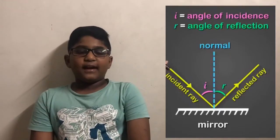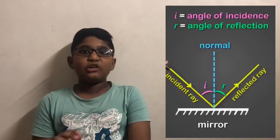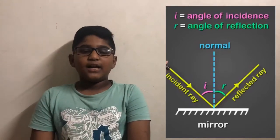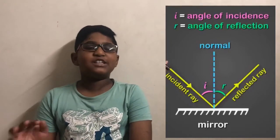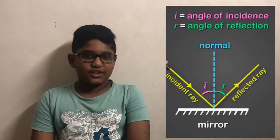The angle between the line of incidence and the normal is the angle of the incident ray. The angle between the normal and the reflected ray is called the angle of reflection.